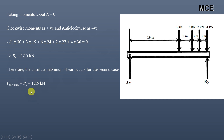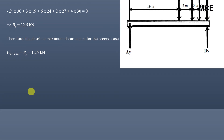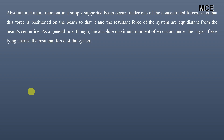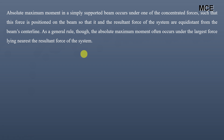The absolute maximum moment in a simply supported beam occurs under one of the concentrated loads, positioned so that this force and the resultant of all forces are equidistant from the beam centerline. As a general rule, the absolute maximum moment will occur under the largest force nearest to the resultant of the system. You must place the load such that this force and the resultant are equidistant from the centerline, then find the value of the absolute maximum moment under this force.